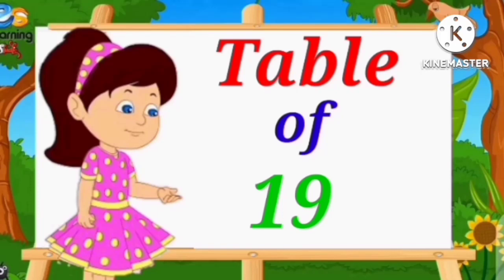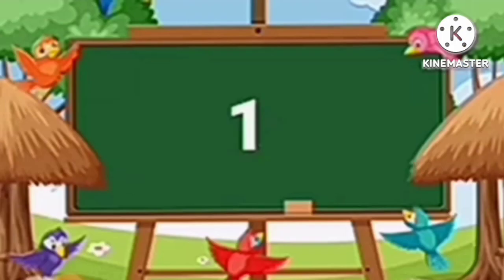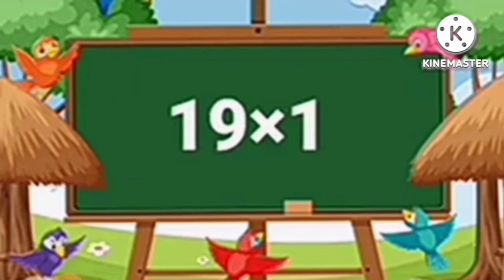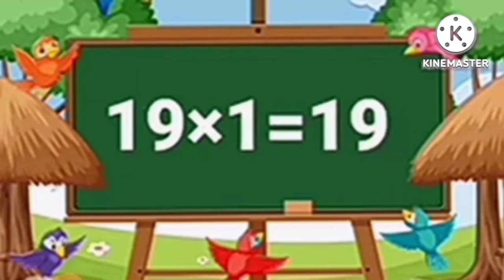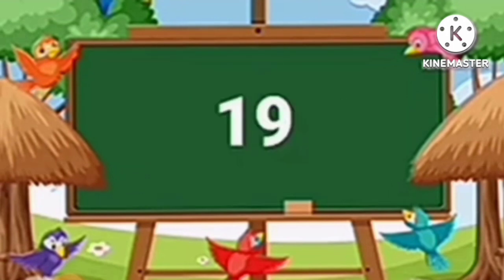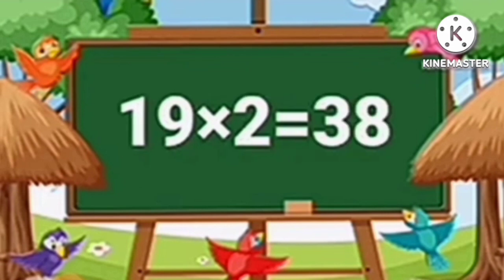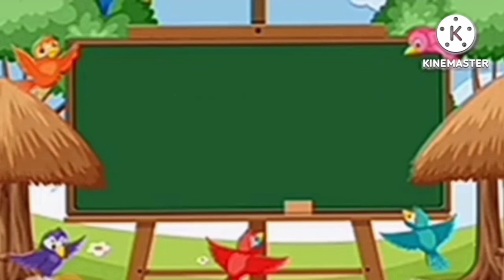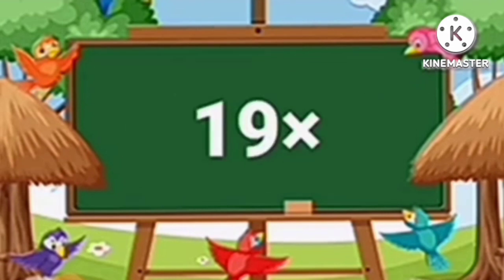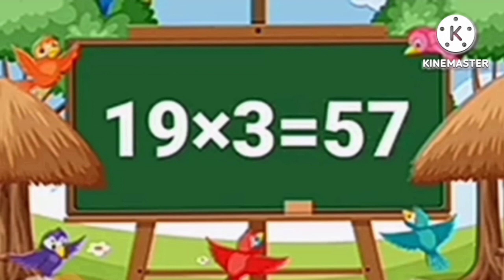Table of Nineteen. Nineteen ones are nineteen. Nineteen twos are thirty-eight. Nineteen threes are fifty-seven.